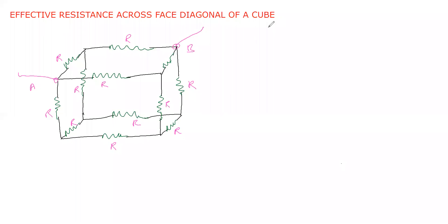In this class we calculate the effective resistance of a cube across the face diagonal of a cube. Here 12 equal resistors are taken along the edges of a cube. There are six faces, and along any face of the cube we are going to find the effective resistance.